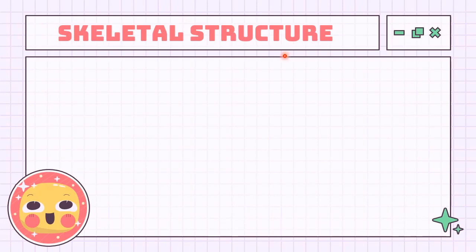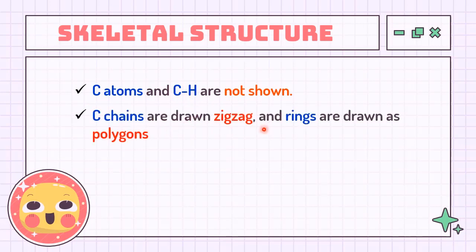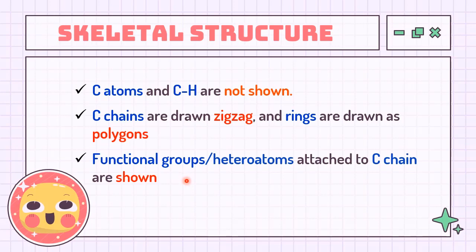Lastly, skeletal structure. This structure does not show all single bonds between carbon and carbon, and also carbon and hydrogen. In other words, carbon chains are drawn in zigzag, while the carbon rings are drawn in polygons. The only elements to be drawn in the structure are heteroatoms or functional groups.